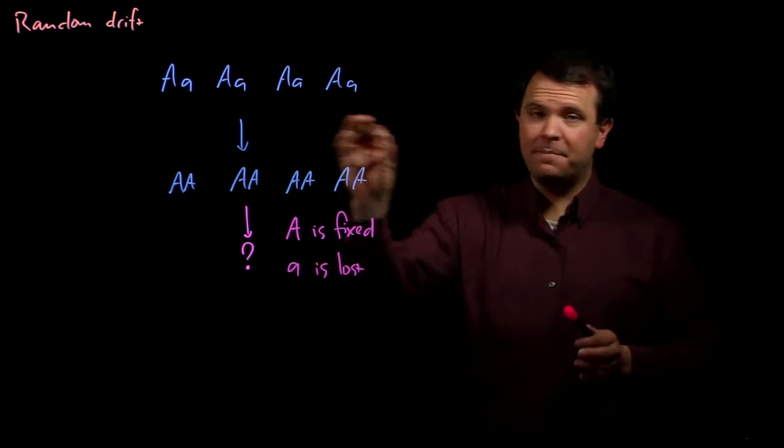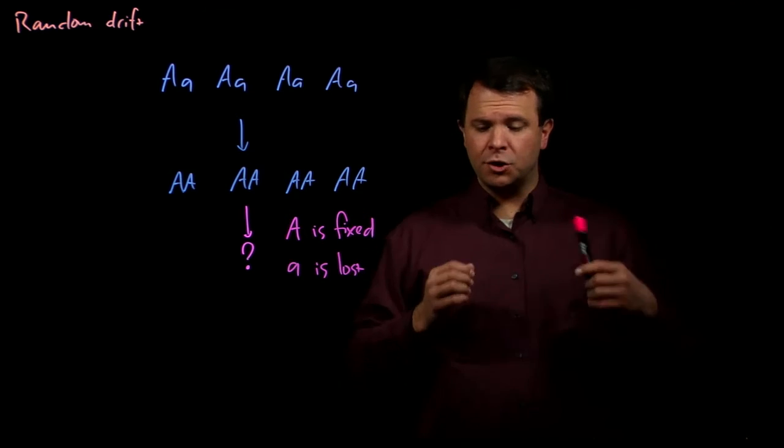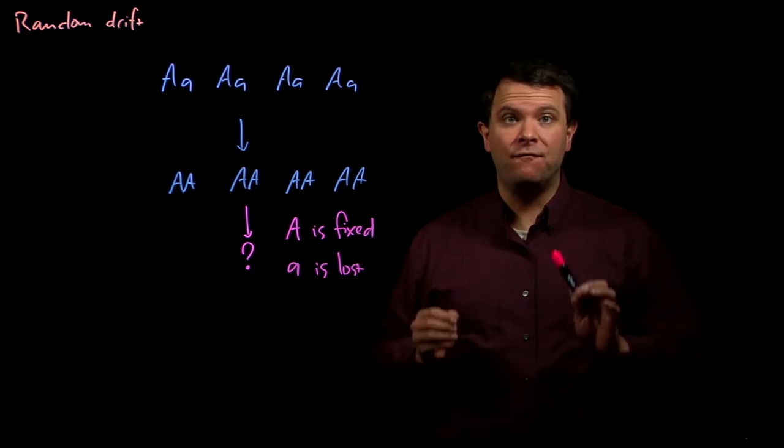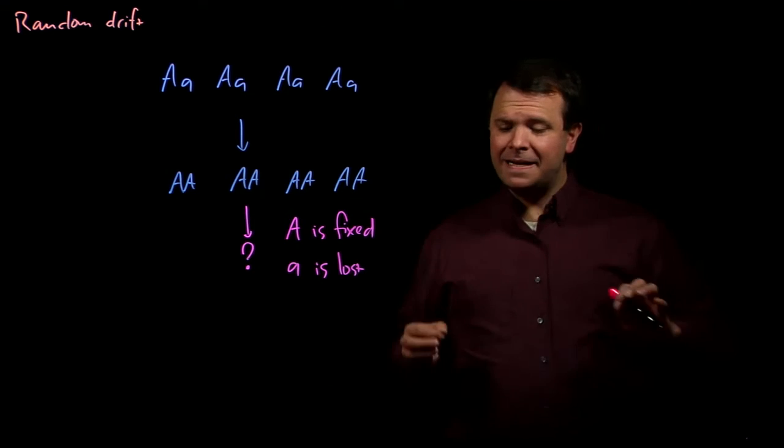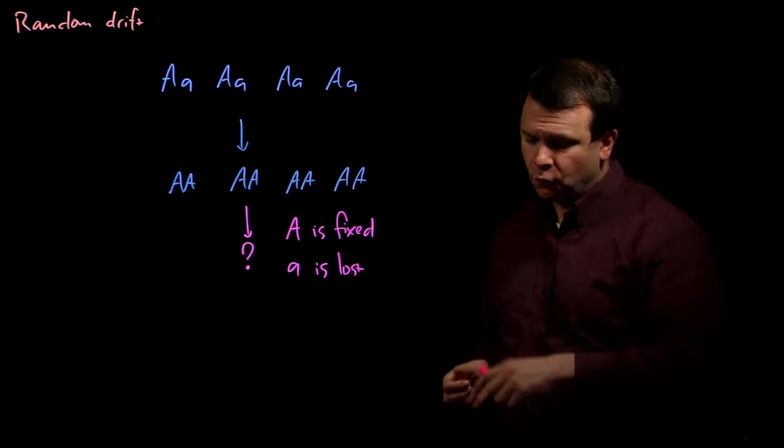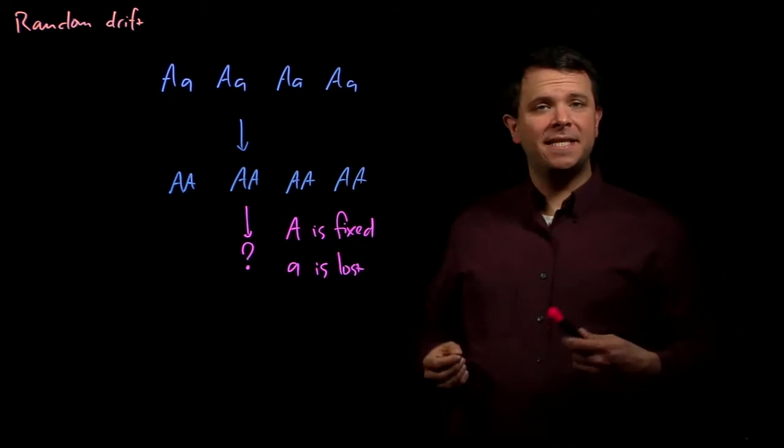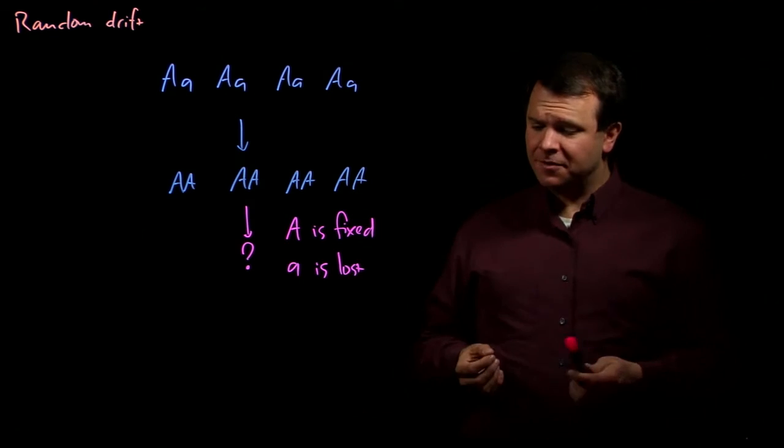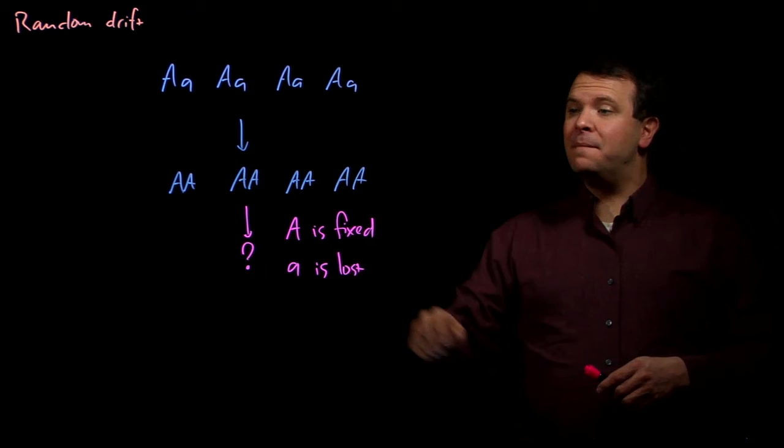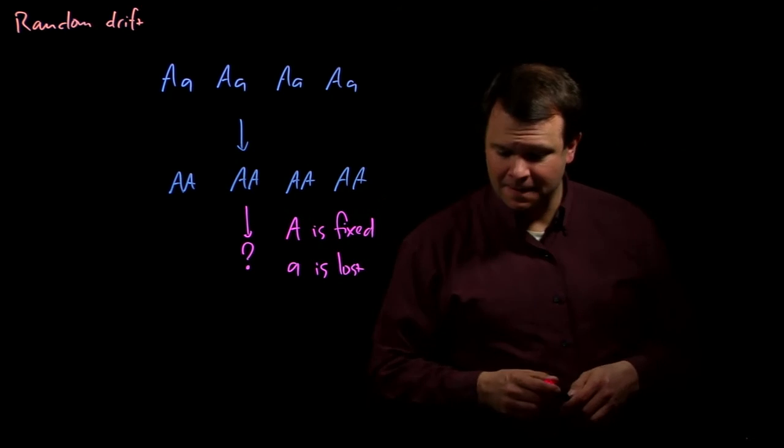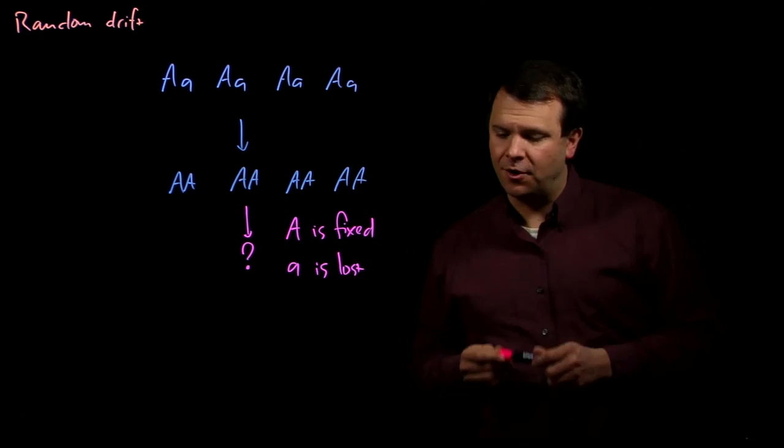In a small population, alleles being fixed or lost over a short number of generations is very common. For example, I simulated ten different populations of four individuals who all start out heterozygous. And after these ten generations, in three of them the big A allele had become fixed, and in another three of them that big A allele had been lost.